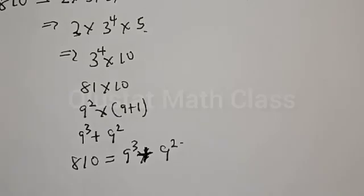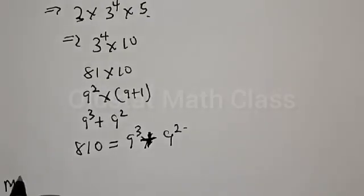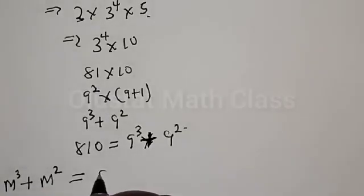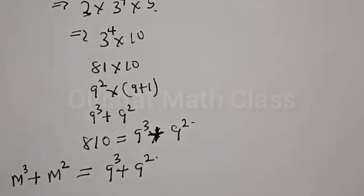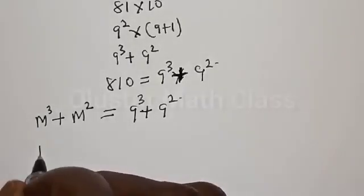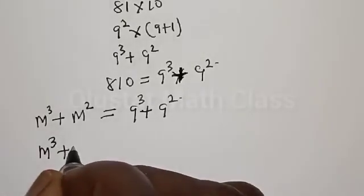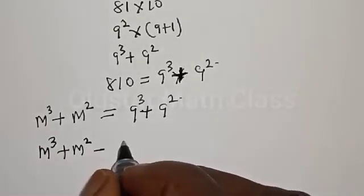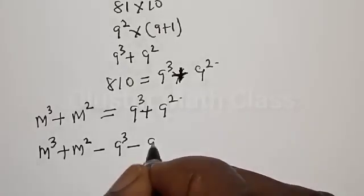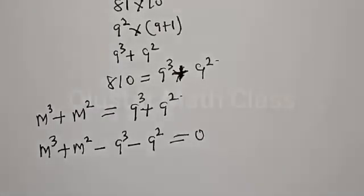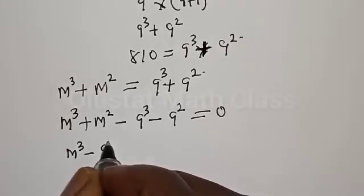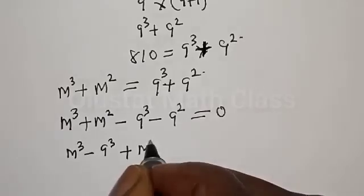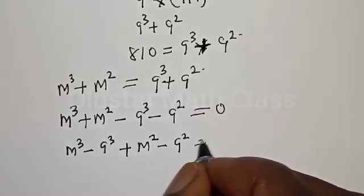Now let's substitute back to the main equation. We have M³ plus M² equal to 9³ plus 9 squared. Let's equate it to zero. We have M³ plus M² minus 9³ minus 9 squared equal to 0. This can be rearranged as M³ minus 9³, then plus M² minus 9 squared, equal to 0.